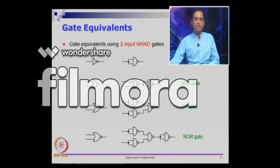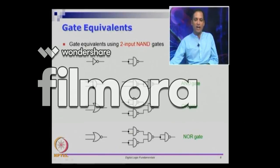This module covers some equivalences we already discussed. An inverter is equivalent to connecting the same input to both inputs of a NAND gate. A NAND gate followed by an inverter is AND. If you invert the inputs and give them to a NAND gate, that is equivalent to an OR gate. Attaching an inverter to the output of that circuit gives a NOR gate. This is just to recap what we did so far.